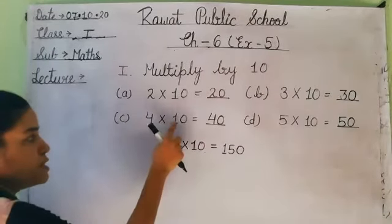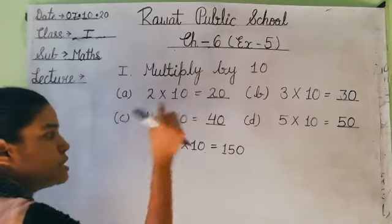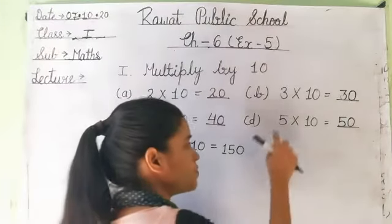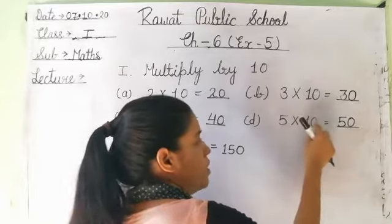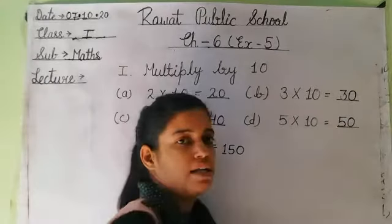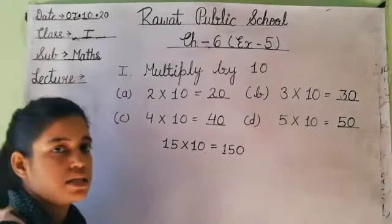Next question C: 4 ones are 4, add one zero makes 40. Question D: 5 ones are 5, add one zero makes 50. This way you can do it.